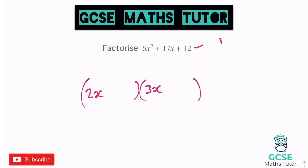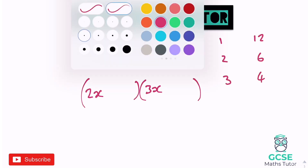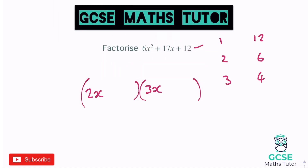Factors of 12: 1 and 12, 2 and 6, or 3 and 4. This is a little bit harder because one factor is going to double and one is going to triple. For 1 and 12: double 1 is 2, triple 12 is 36 — way beyond 17. Triple 1 is 3, double 12 is 24 — still can't make 17. For 2 and 6: double 2 is 4, triple 6 is 18 — can't make 17. Triple 2 is 6, double 6 is 12 — can only make 18. So it's going to have to be 3 and 4.